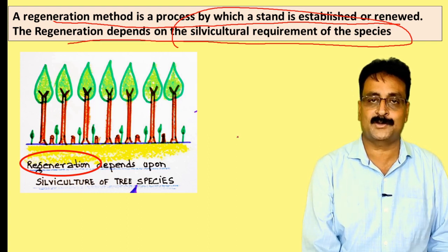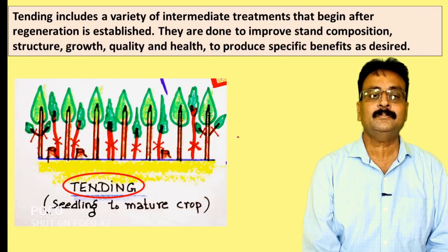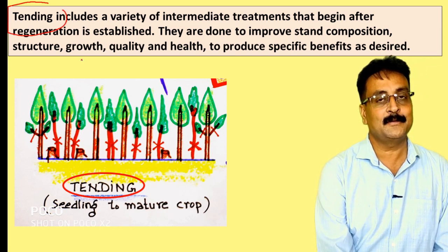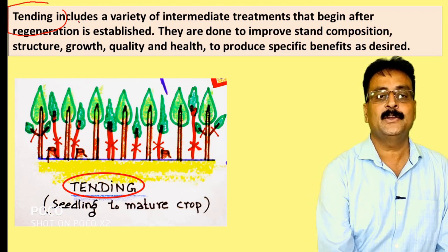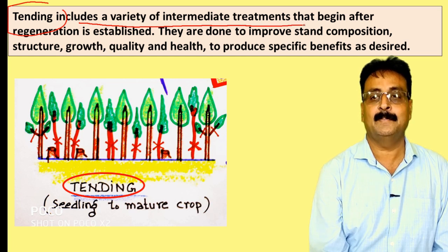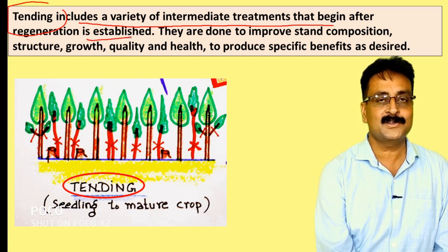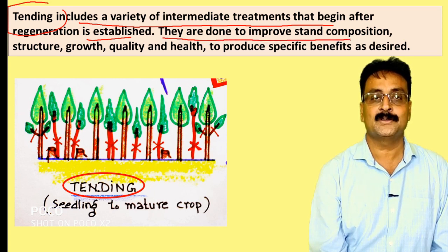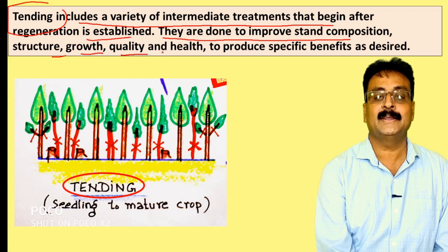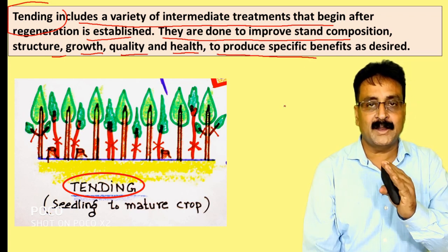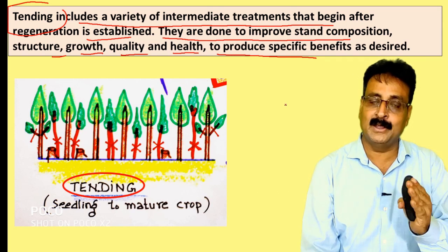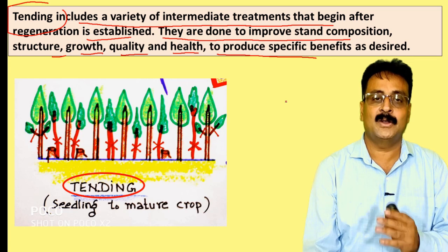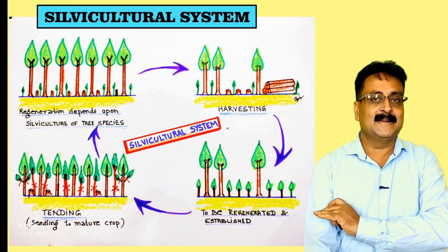The third component is tending. Tending is very important for the health of the species and the forest. Tending includes a variety of intermediate treatments that begin after regeneration — from the seedling stage to the mature crop. Tending is done to improve strength, composition, structure, growth, quality, and health to produce specific benefits. This may include pruning, thinning, and climber cutting to improve forest condition.